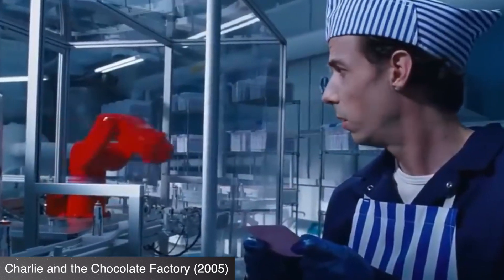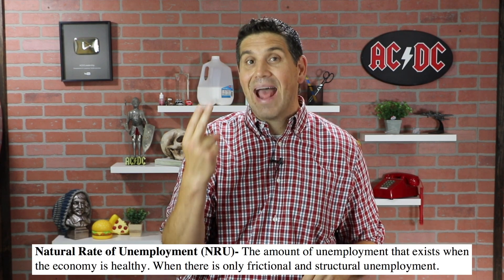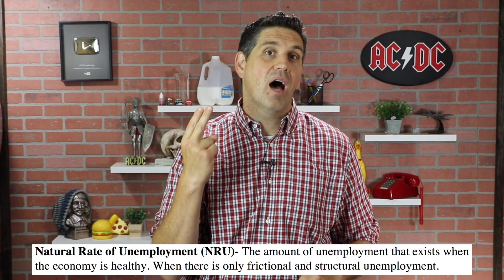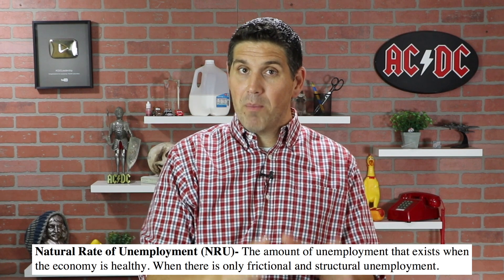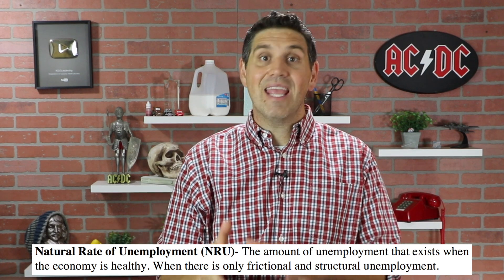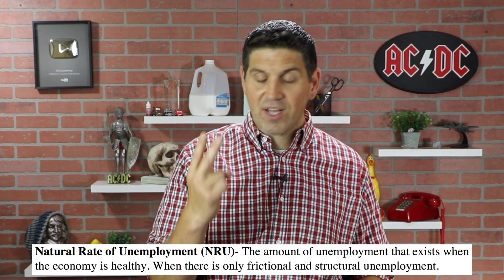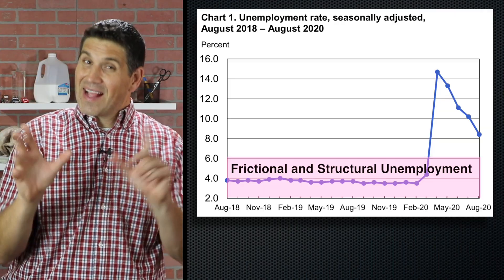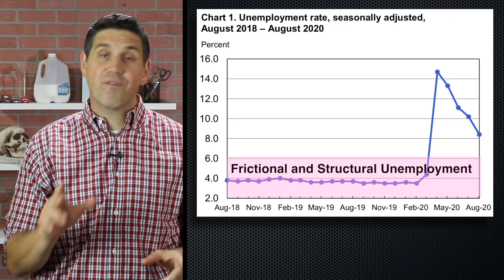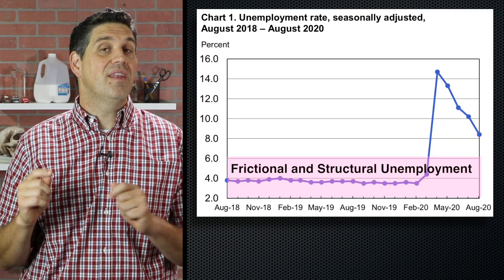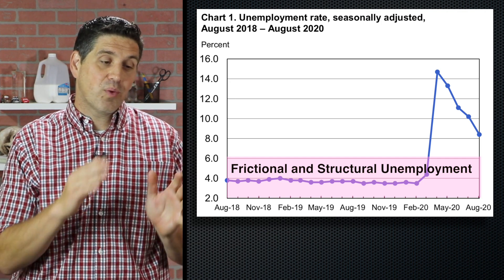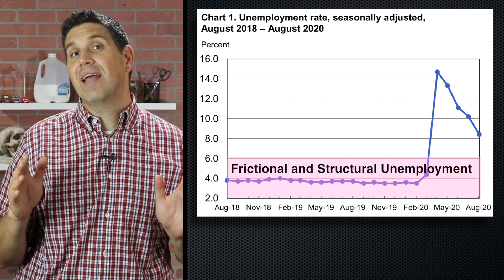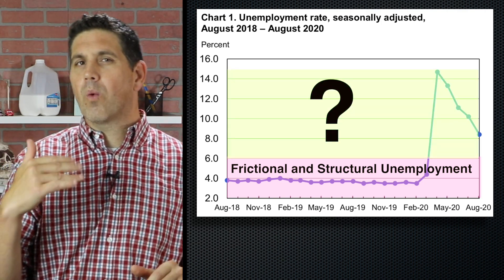These two types of unemployment always exist, and together they make up the natural rate of unemployment. This is the amount of unemployment that exists even when the economy is doing great. So when we have frictional and structural unemployment, we're at full employment. That's actually a little different for every country, but in the U.S. the natural rate of unemployment is somewhere between four and six percent.